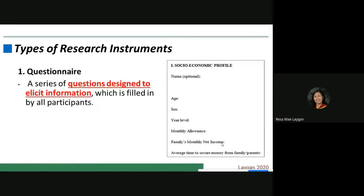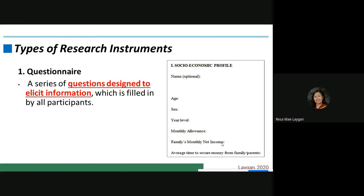A questionnaire is a series of questions designed to elicit information, which is filled in by all participants — or the researcher may fill in the information gathered from participants. The information should come from your participants. On the left side, you can see a sample questionnaire asking about the socioeconomic profile of respondents, including name, age, sex, year level, monthly allowance, family net income, and so forth.